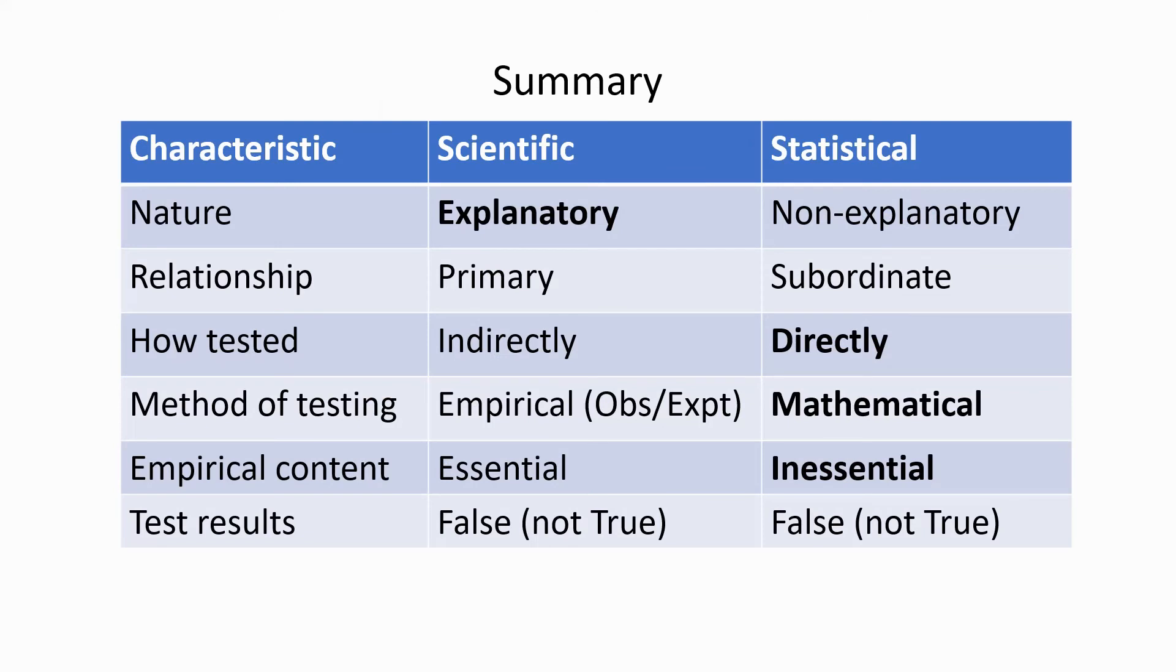Here's a table comparing the two kinds of hypothesis. The scientific hypothesis is fundamentally explanatory, whereas the statistical hypothesis is non-explanatory. The scientific hypothesis is the primary concept. It implies or makes predictions that may be tested with statistical hypotheses. They are therefore subordinate.